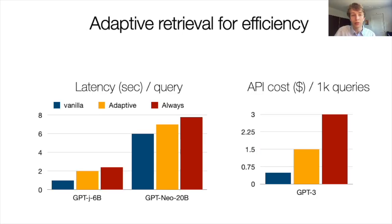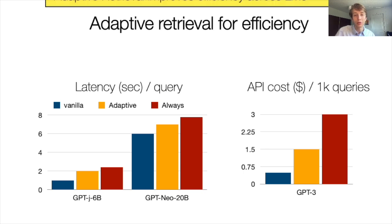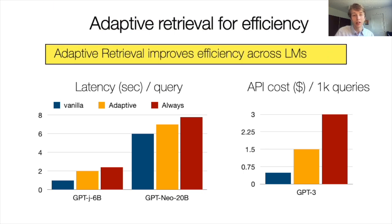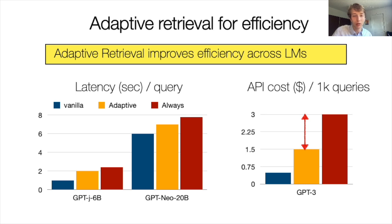This also reduces the inference time latency as well as the API cost. For more scaling results and a more fine-grained mechanistic view of how popularity, relationship type, scale, and retrieval all play into language model factual knowledge, come see our main conference oral presentation.